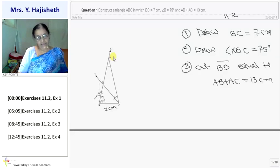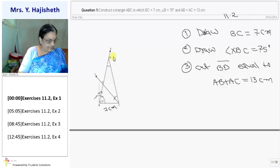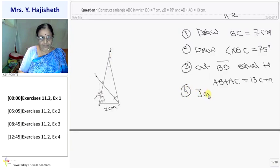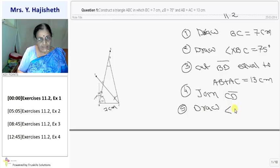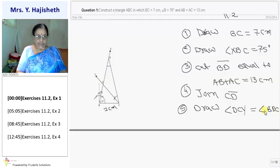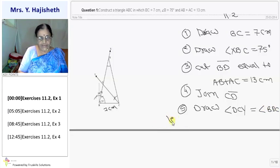Joint CD. Fourth step is join CD. Now, fifth is draw angle DCY is equal to angle BDC. Let it intersect your BD at A.